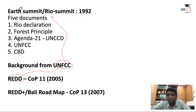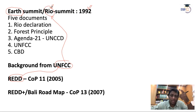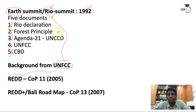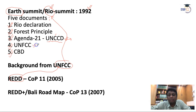The 1992 Rio Summit produced five documents: the Rio Declaration, the Forest Principles, Agenda 21, the UNFCCC, and the CBD. Under Agenda 21, after two years the UNCCD — United Nations Convention to Combat Desertification — was formed. The most important document here is UNFCCC: United Nations Framework Convention on Climate Change.